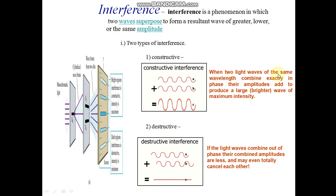When two light waves of same wavelength combine exactly in phase, amplitudes add to produce a larger, brighter wave of maximum intensity. Destructive interference: If the light waves combine out of phase, their combined amplitudes are less and may even totally cancel each other.